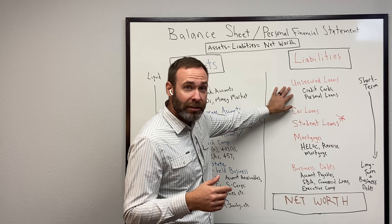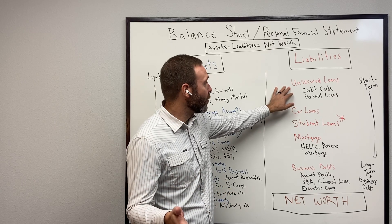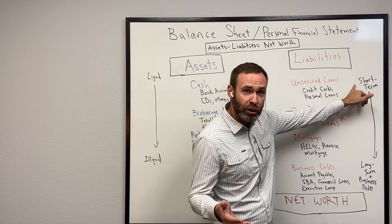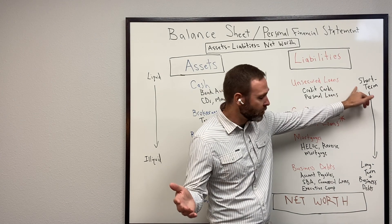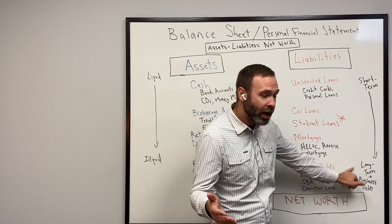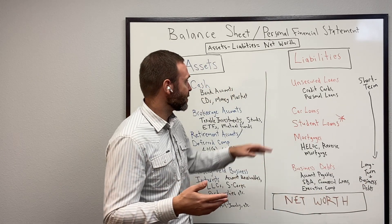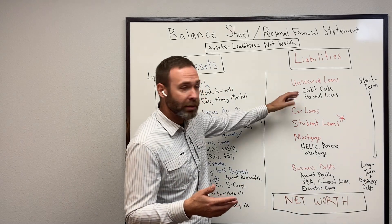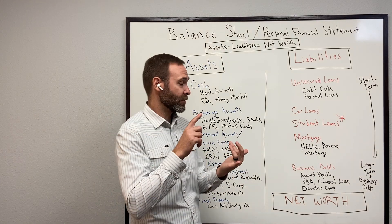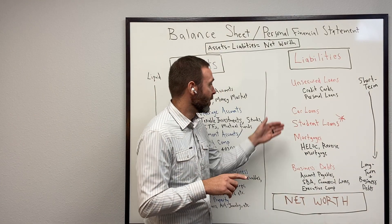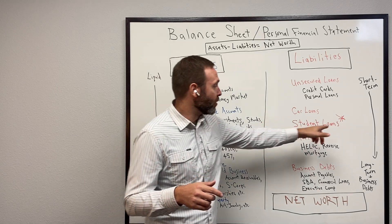Over on the other side, you list all of your debts — what you owe. It goes from short-term and short-term personal to long-term, and then any business debts if you own a business. It starts with unsecured loans — credit cards and personal loans — then car loans, and then student loans.